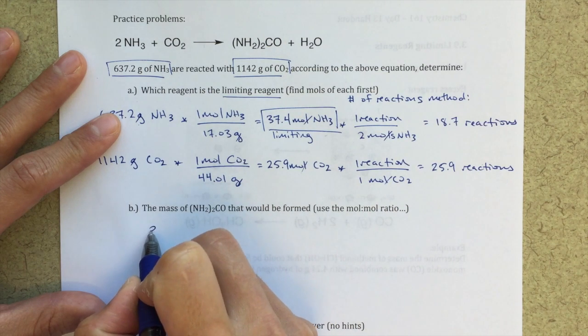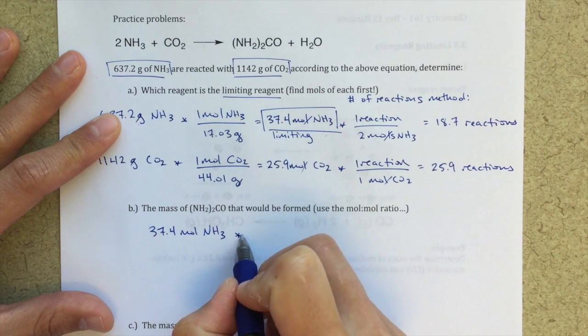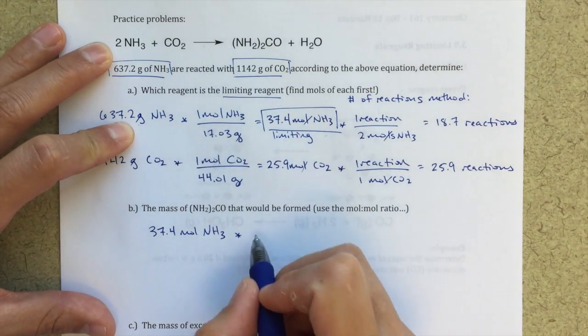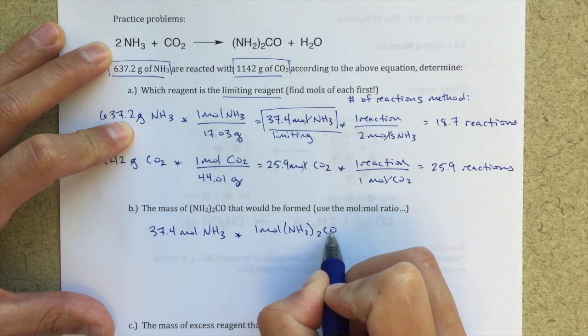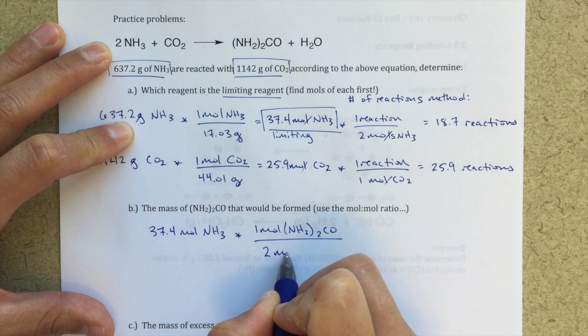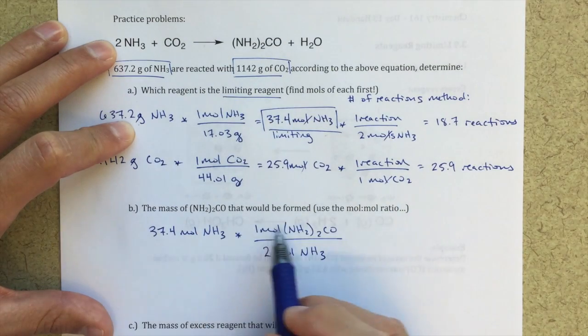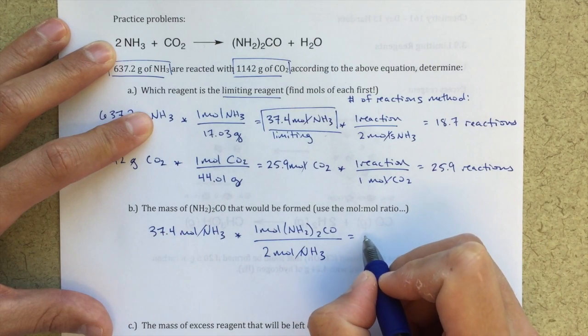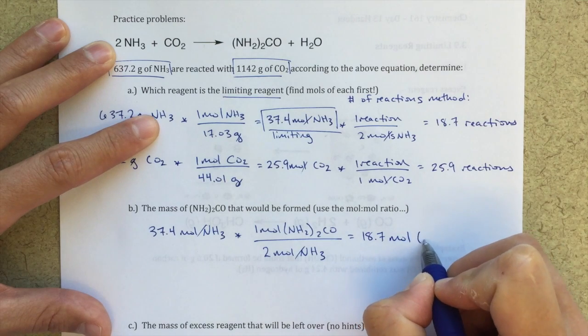So now I can say, 37.4 moles of NH3, that's going to be my limiting reactant. How much product can I make with this limiting reactant? I'm going to use the mole-to-mole ratio. So the mole-to-mole ratio here is going to be one to two. For every one mole of product, it takes me two moles of NH3. So two moles here gives us one mole of product, so I'm going to use this mole-to-mole ratio. My moles of NH3 will cancel, and then I will find that I can form 18.7 moles of my product.